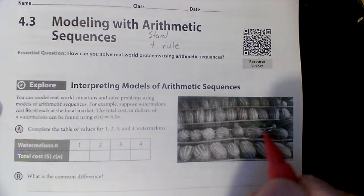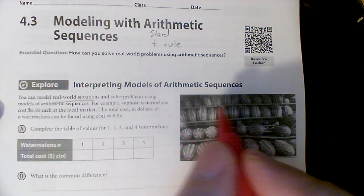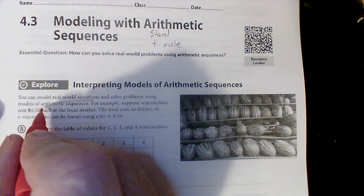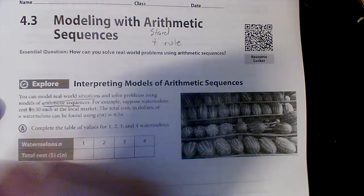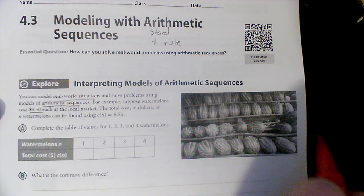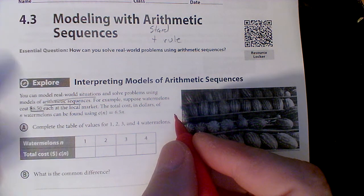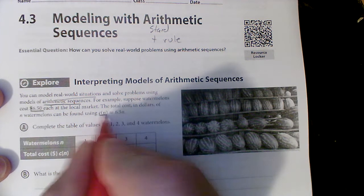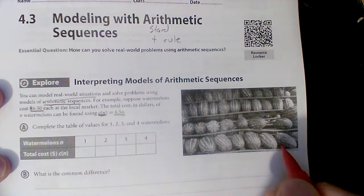So here's a real-life situation. You can model real-world problems or real-world situations and solve problems using models of arithmetic sequences. For example, suppose watermelons cost six dollars and fifty cents each. The total cost of n watermelons could be found using this. The cost in relation to the number of watermelons is equal to six dollars and fifty cents per watermelon.